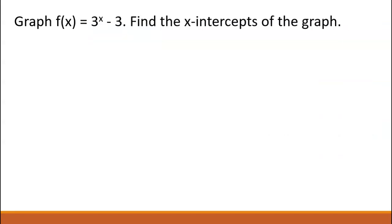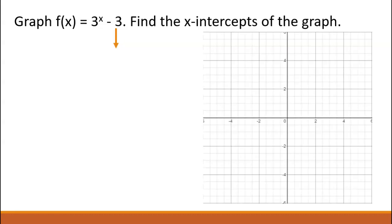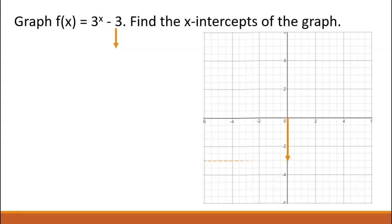Let's look at another example. Graph f(x) equals 3 to the x minus 3, and find the x-intercepts. First, identify how the parent graph has changed: it has only shifted down 3. Second, graph the asymptote — instead of being on the x-axis, it has shifted down 3 to negative 3.